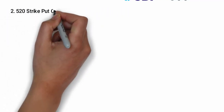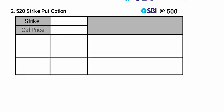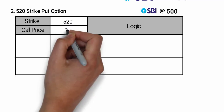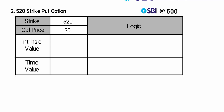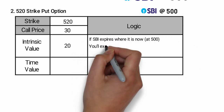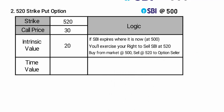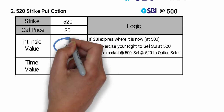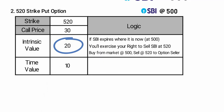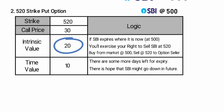Number two: the 520 strike put option. This gives you the right to sell SBI at 520 rupees. The strike is 520 and the put option price is 30 rupees. The intrinsic value here is 20 rupees. Why? Because if SBI expires at 500, you will exercise your right to sell SBI at 520. You can buy SBI from the market at 500 and sell at 520 to the option seller, making 20 rupees straight. This makes the option worth at least 20 rupees. That's why the intrinsic value is 20 rupees. Here the time value is 10 rupees — there is a hope that SBI might go down in future.